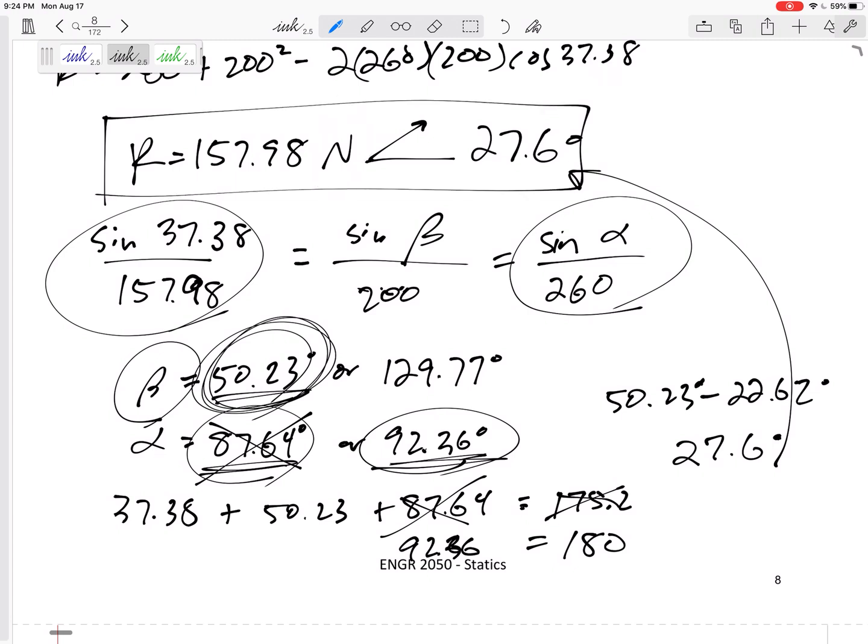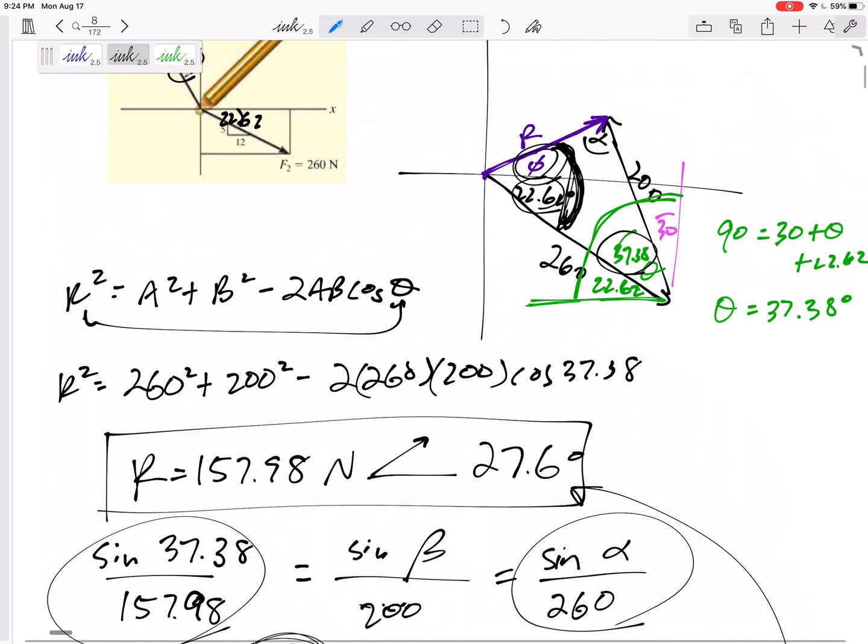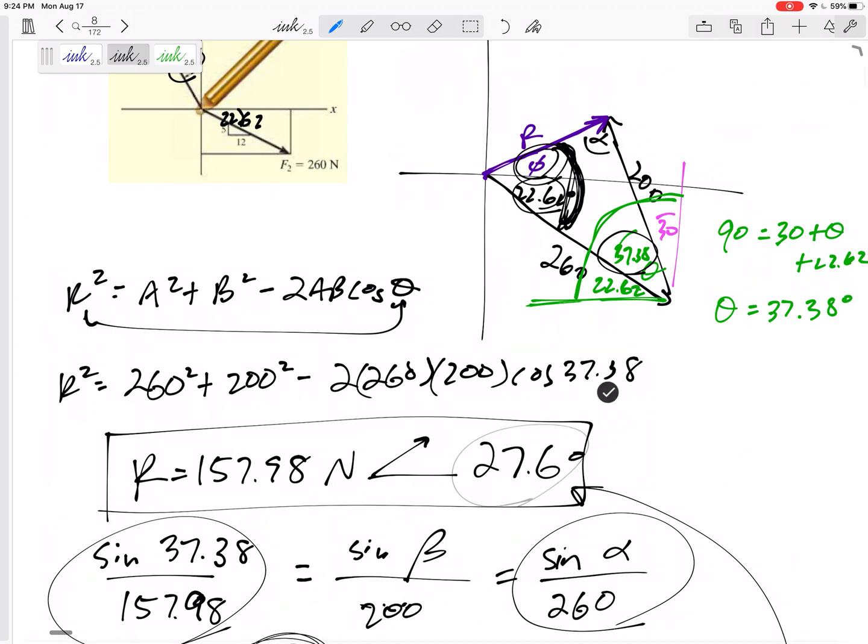It has units, newtons. It has the angle that it is from horizontal. Always measure, you know, don't tell me it's at 50.23 degrees. No, it's 27.6 degrees from horizontal. All right. That was a good one. That was a good one. That was the last one for this chapter.